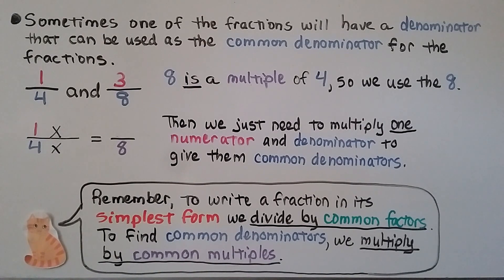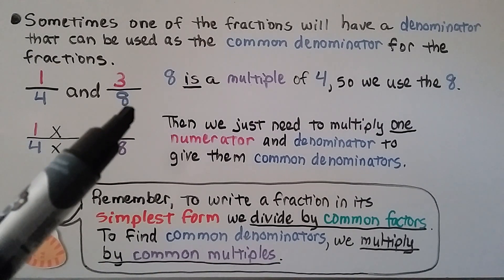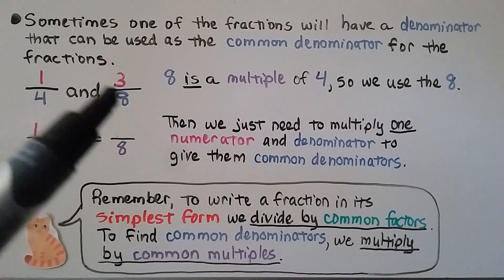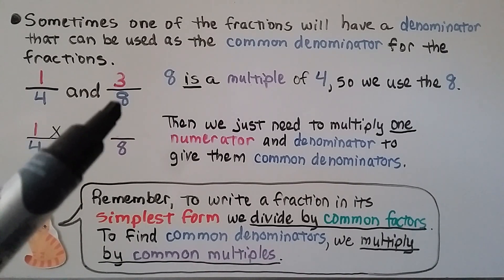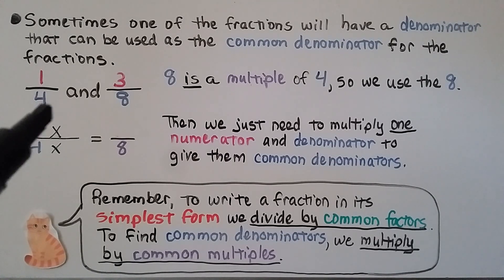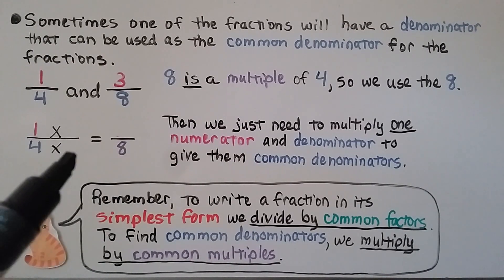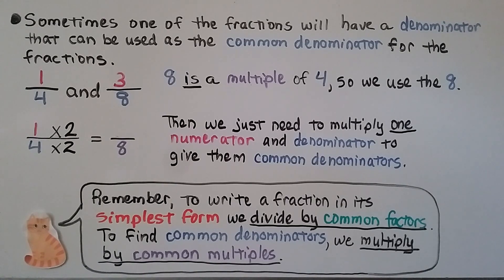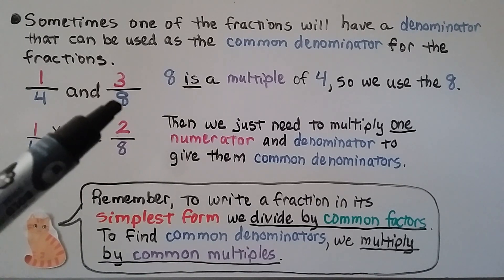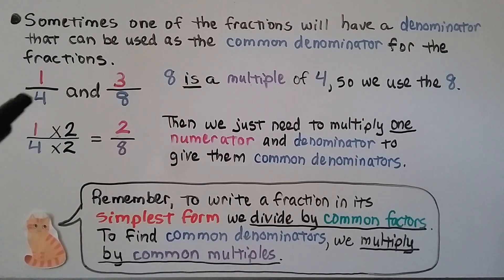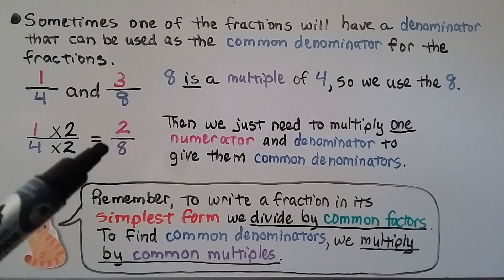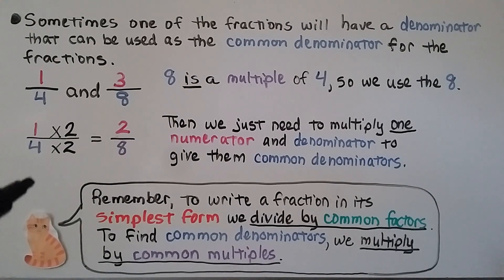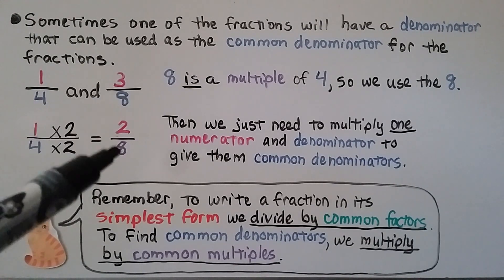Sometimes one of the fractions will have a denominator that can be used as the common denominator for both fractions. Eight is a multiple of four, so we can use eight. We only have to convert the fraction with denominator four to have a denominator of eight, and leave the other one alone. Four times two equals eight, so we multiply the numerator by two also, giving us two-eighths. Because eight is a multiple of four, this fraction got left alone, and we just changed the other one to have a denominator of eight.